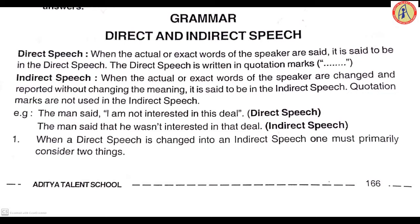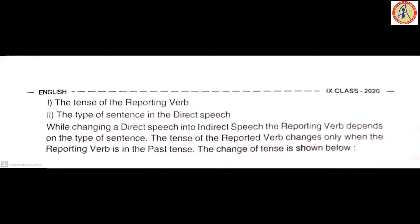Now the rules. When a direct speech is changed into indirect speech, one must primarily consider two things: first, the tense of the reporting verb — say, says, said, said to, will, or other modal verbs; second, the type of sentence in the direct speech — whether it is assertive, interrogative, imperative, or exclamatory. Both must be observed while changing direct speech into indirect speech.